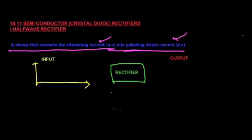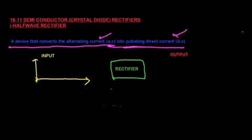Before we see the complete electronic circuit diagram, let's see how a rectifier works. We are going to see inputs on the left hand side of the screen and our outputs on the right hand side. So let's suppose we have this graph and I'm going to draw an AC wave that we will provide to the rectifier as an input.